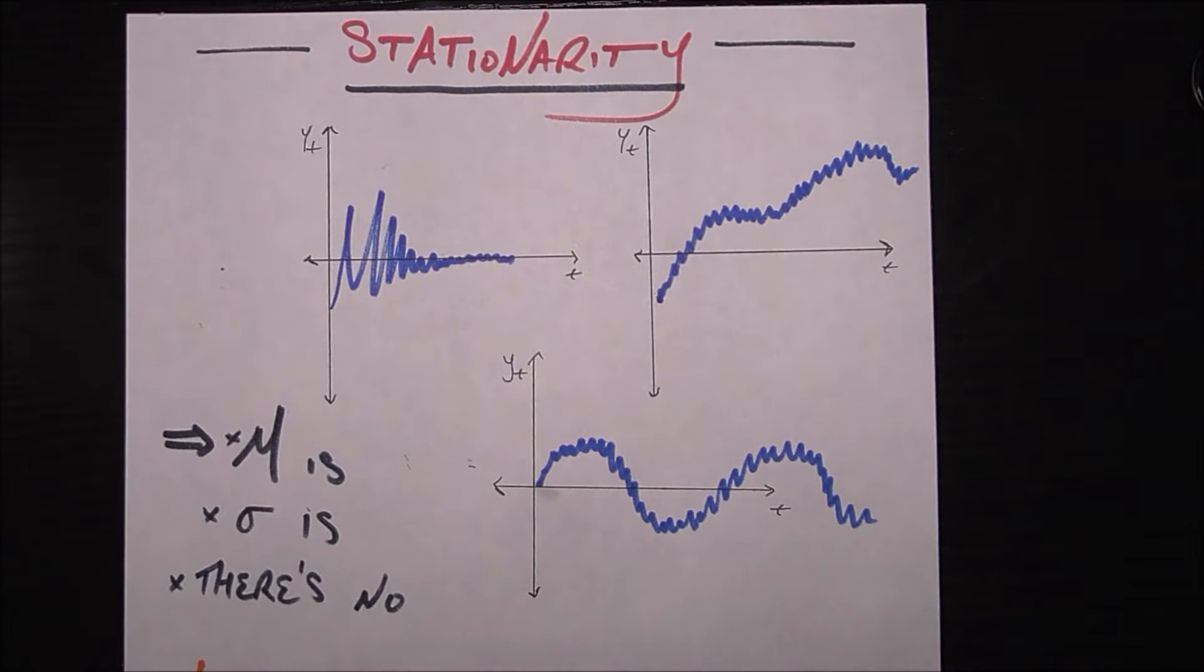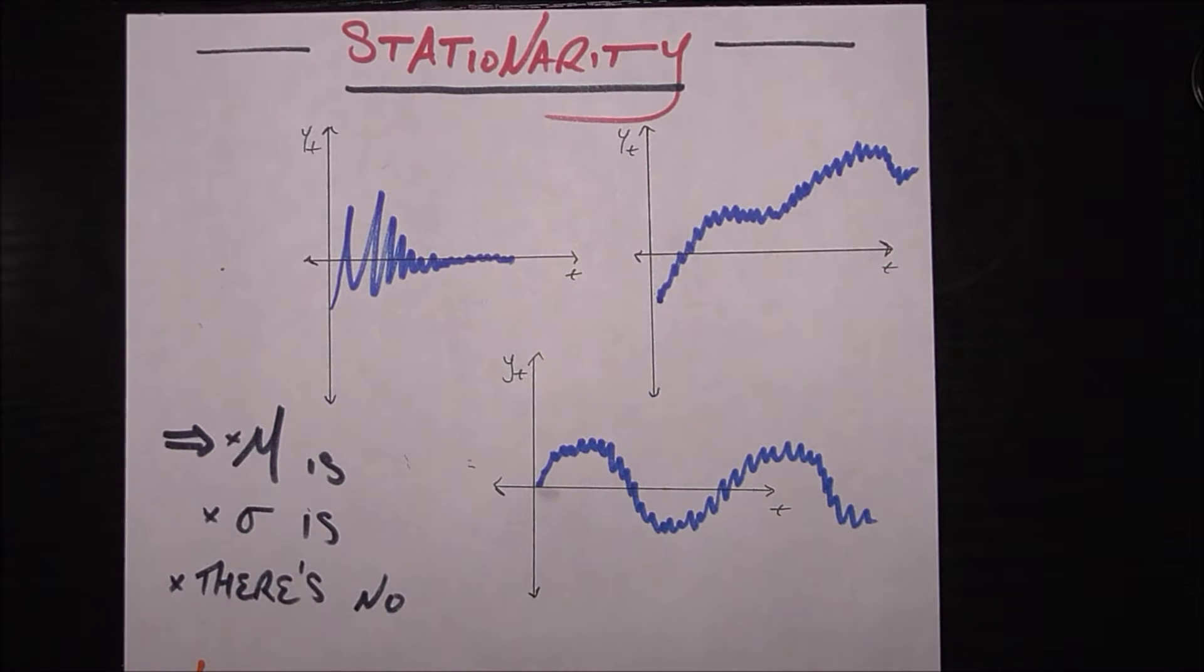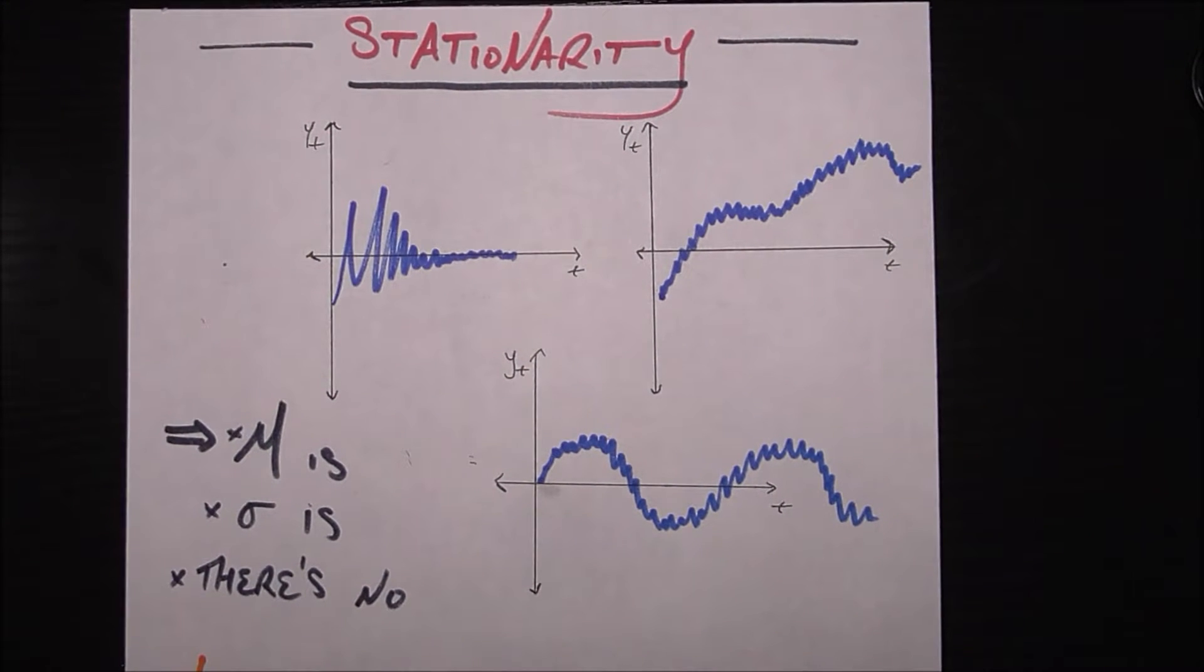These models assume that the time series you're trying to use them on are stationary. So what we're going to do in this video is first talk about what are the conditions for a time series to be stationary, we'll be looking at how to check for stationarity, and then lastly we'll look at if a time series is not stationary, what are some tricks you can do to make it stationary so that you can take advantage of these models.